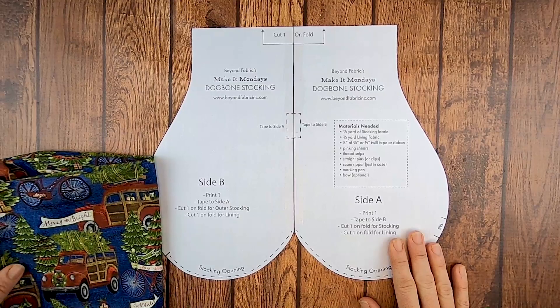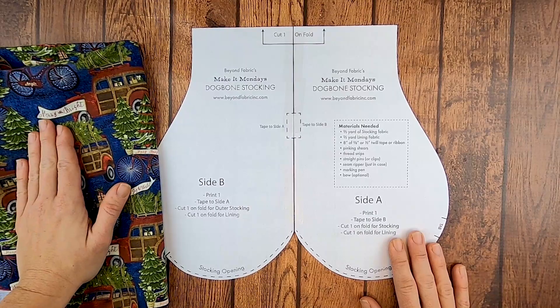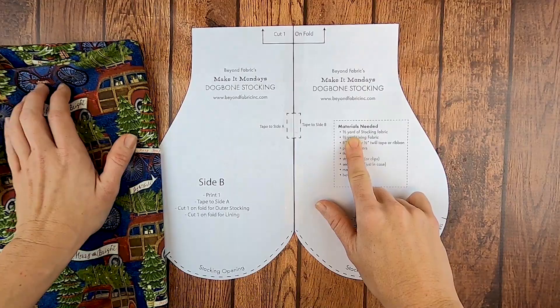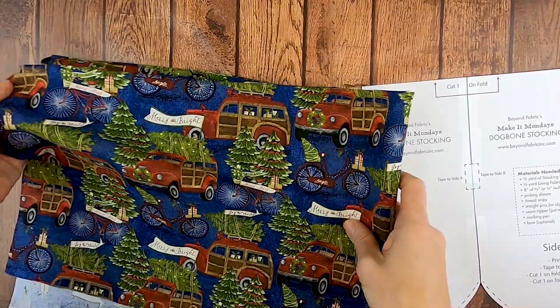Alright, I'm back with my fabric. I picked one with a pattern on it so that you can see how I'm going to lay the stocking down on it. If you've noticed, the materials needed are on your pattern, and so this would be considered the stocking fabric for the outside, two-thirds of a yard.